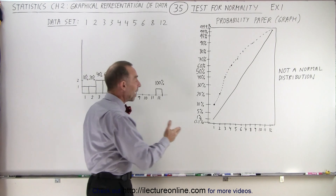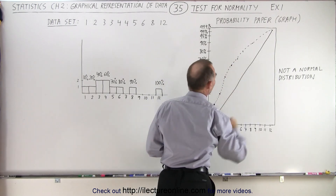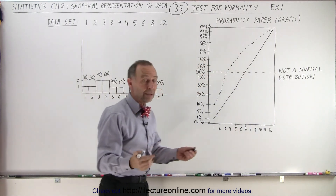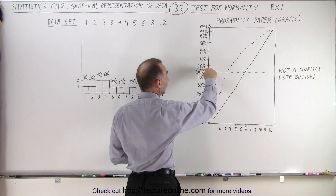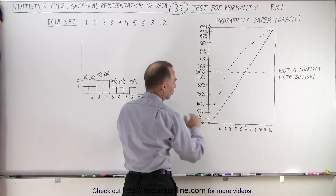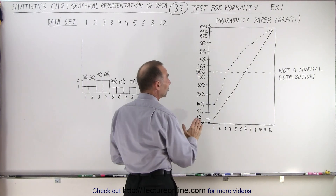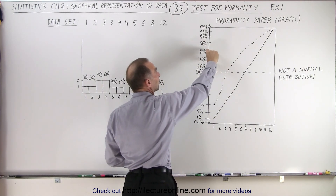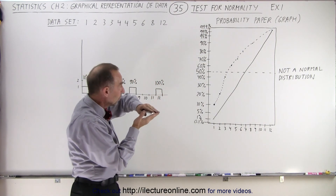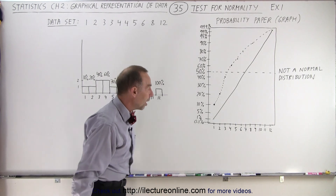If we graph this on the probability paper, notice that at the halfway point from bottom to top, this is the 50% line. Going down from 50, we go to 40, 30, 20, 10, 5, 1, and so forth — and notice that the distance between each 10% increment gets bigger and bigger as you go down. Same going up: 60%, 70%, 80%, 90%, 95%, 99%, 99.9%. The distance to near 0% or near 100% gets larger as you move further up or down on that graph.